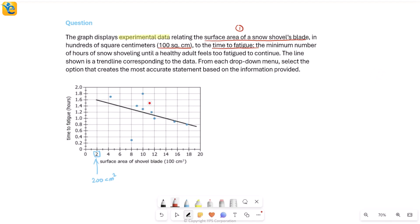It tells us about time to fatigue, described as the minimum number of hours of snow shoveling until a healthy adult feels too fatigued to continue. What does minimum here mean? Let's take an example to understand this.